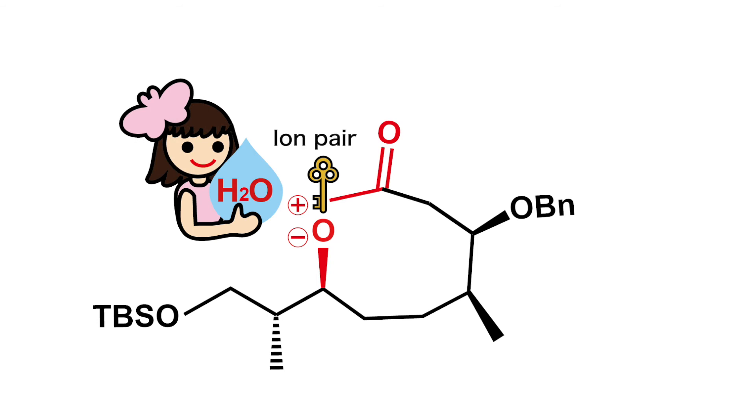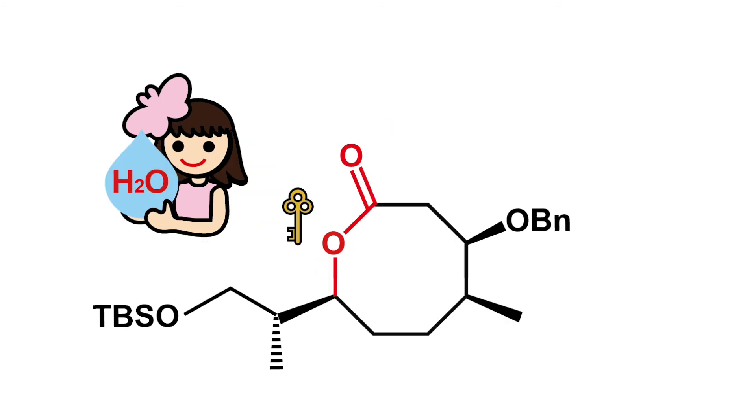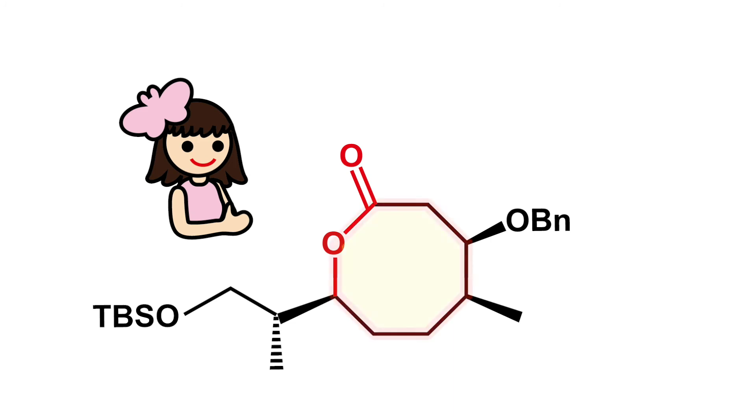By using the co-catalyst and generating a stable positive and negative ion pair, the two ends are connected and the eight-membered ring is swiftly closed.